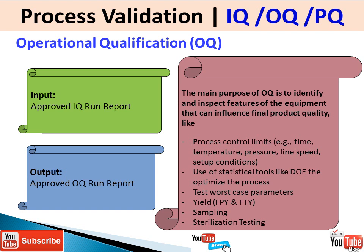The input for operation qualification is the approved IQ report, and the output is the OQ report. During the OQ stage, we inspect process control limits such as temperature, pressure, line speed, and setup conditions. Statistical tools like DOE — design of experiment — are used to optimize the process. We also test worst-case parameters, look at the desired yield such as first pass yield or first time yield, and review sampling plans and inspection testing requirements.